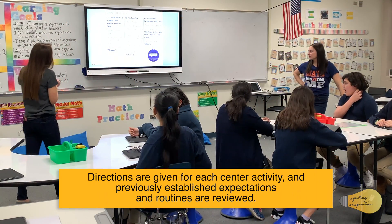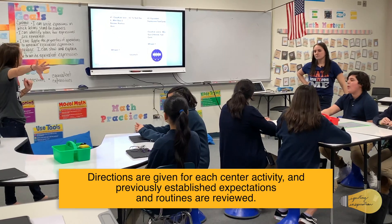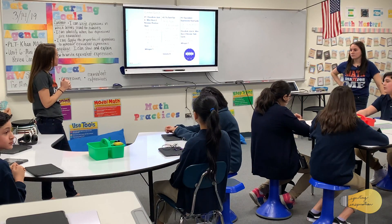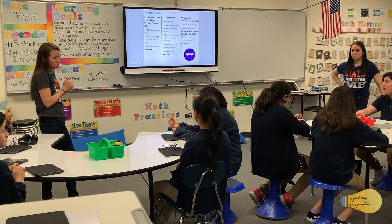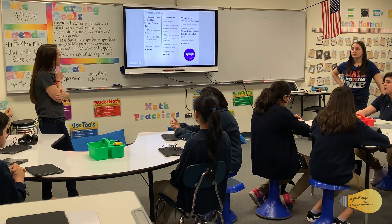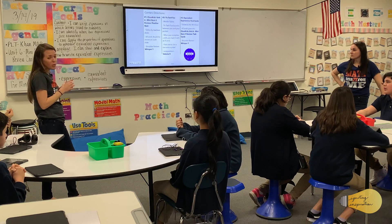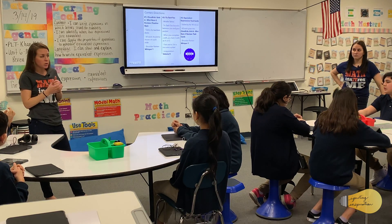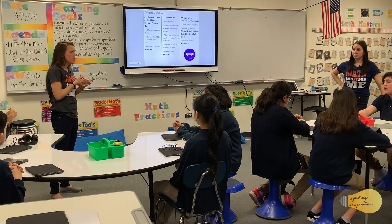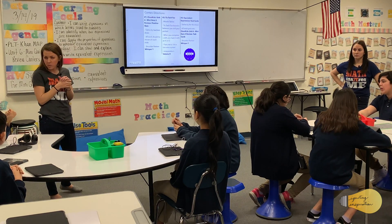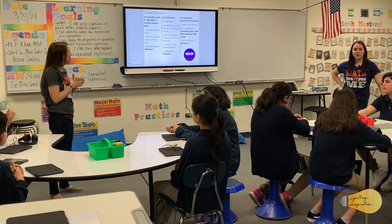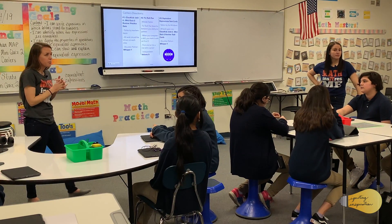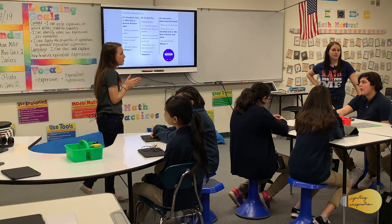We have three centers today. Center one is at our two tables here — it's our Classkick Unit 6 Mini Quiz 2 Review Practice Quiz. You're going to work with your partner at a Whisper 1 level. The Classkick assignment is called Unit 6 Mini Quiz 2 Review Practice Quiz, so you'll work through questions just like your quiz tomorrow, showing your work for each question, and entering your answers to get feedback on most questions. Any work done on your table or whiteboards needs to be photographed and put into the Classkick slide.